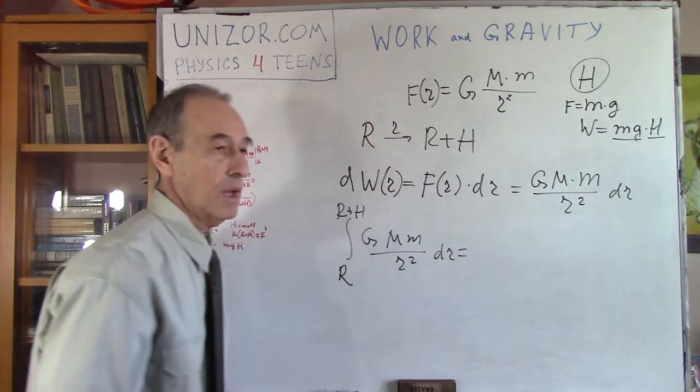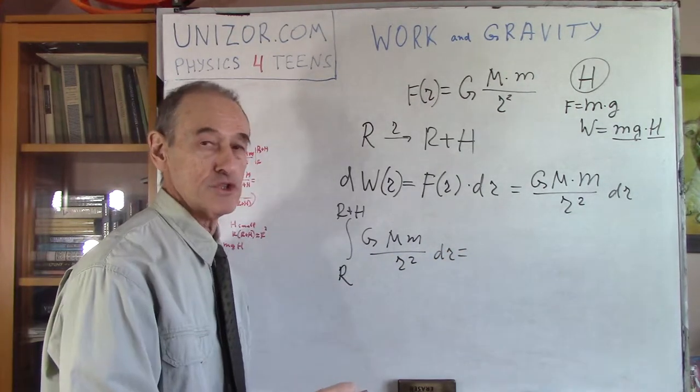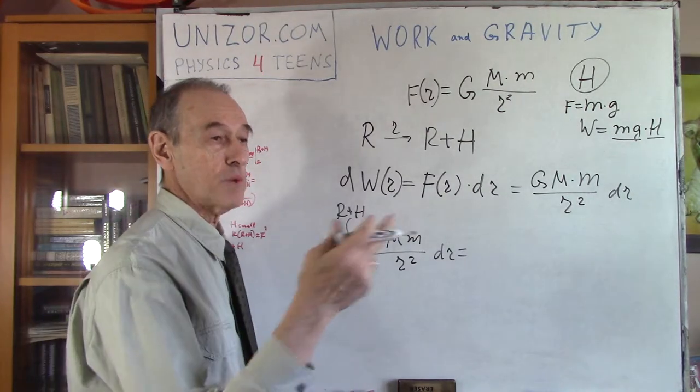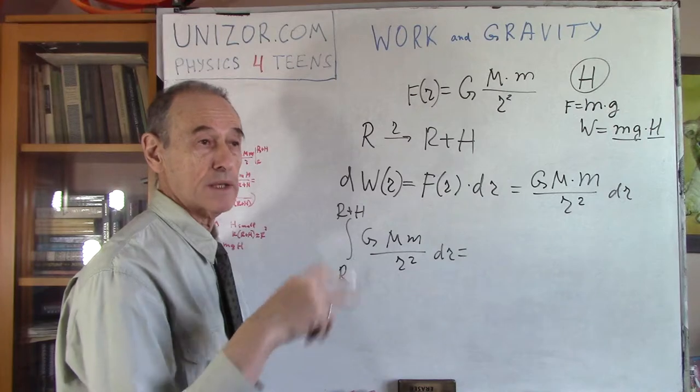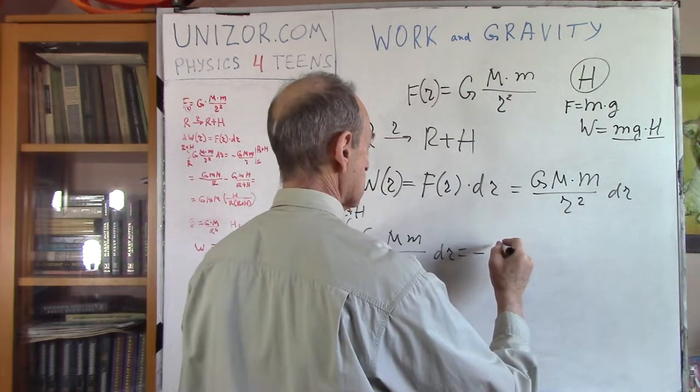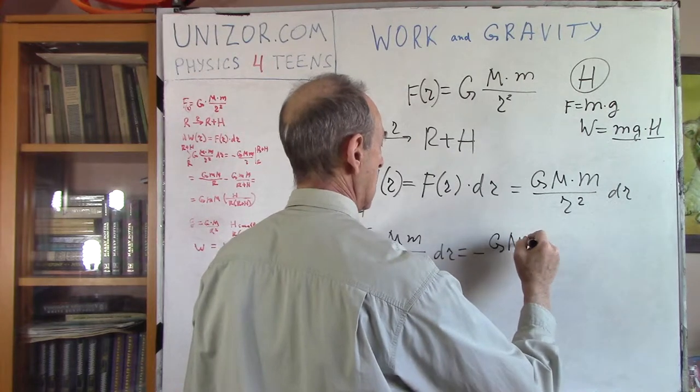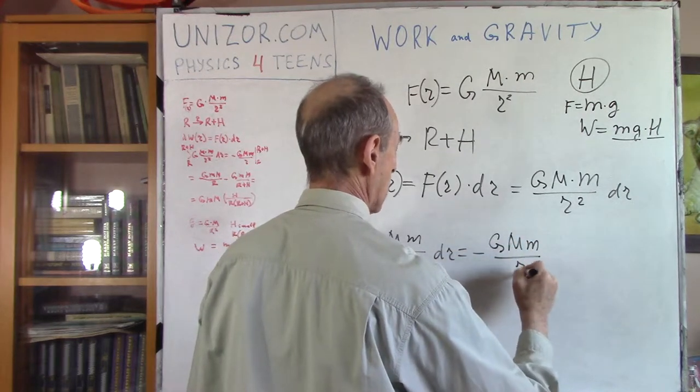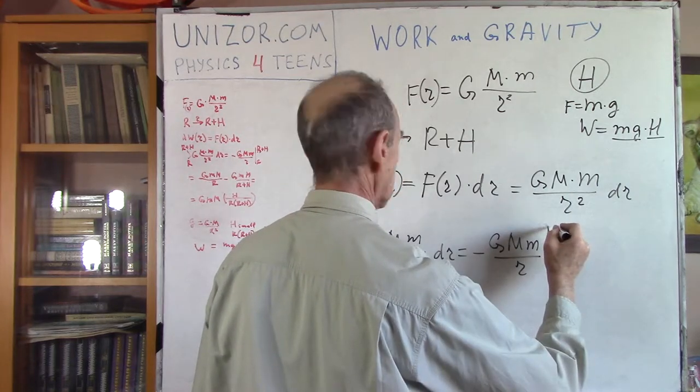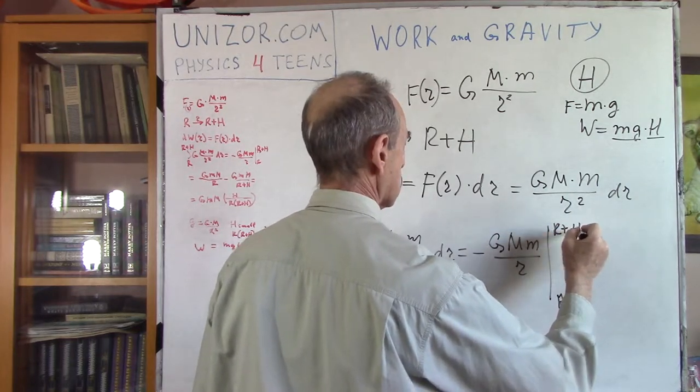Okay. So, what is the function, derivative of which is equal to 1 over r square? Well, the function 1 over r gives derivative minus 1 over r square. So, we need to add minus to this. So, 1 over r divided by r, and we have to limit from r to r plus h.